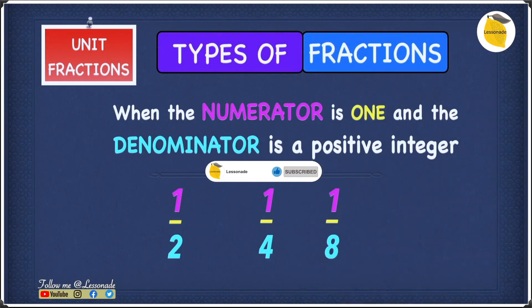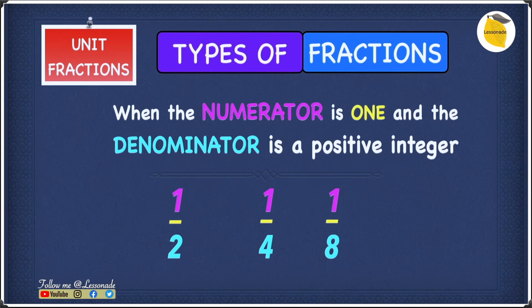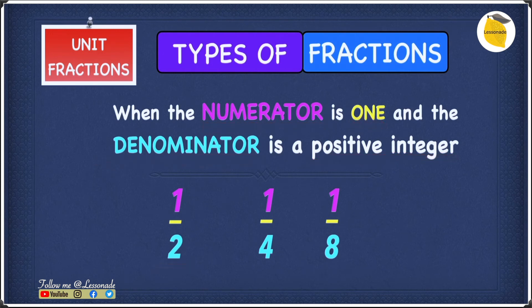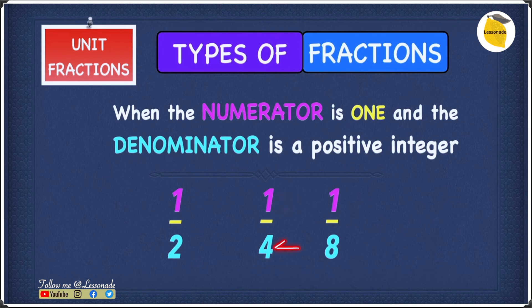Now let's have a look at our fifth type of fraction, which is unit fractions. A unit fraction is when the numerator is 1 and the denominator is a positive integer. So over here, the numerator is 1 and the denominator is a positive integer — it's 2, and it's positive. So 1 over 2 is a unit fraction. Let's have a look at 1 over 4: the numerator is 1 and the denominator is a positive integer — it's 4, and 4 is positive.